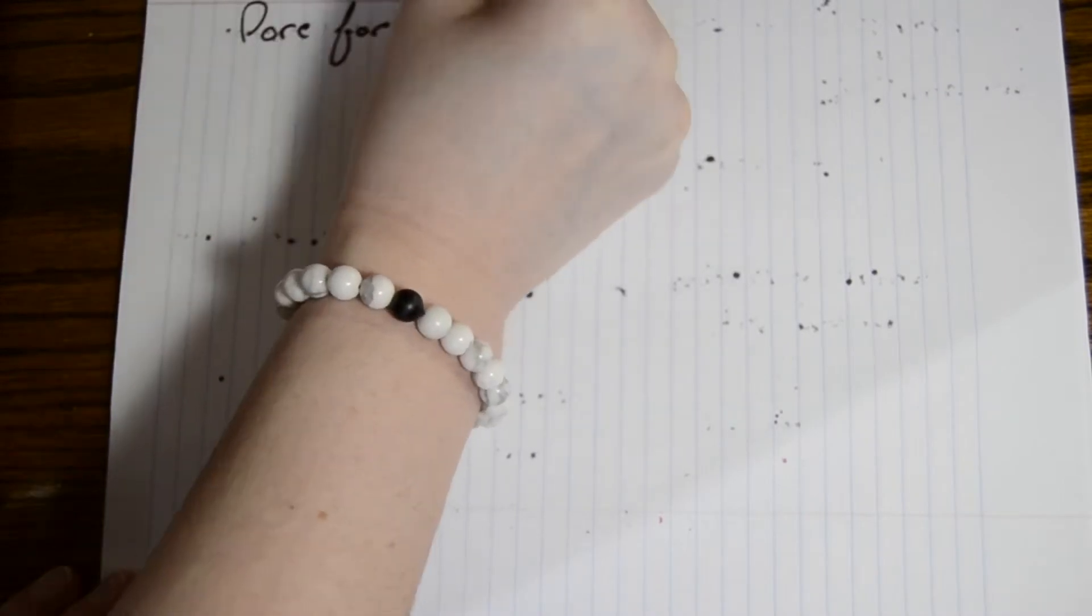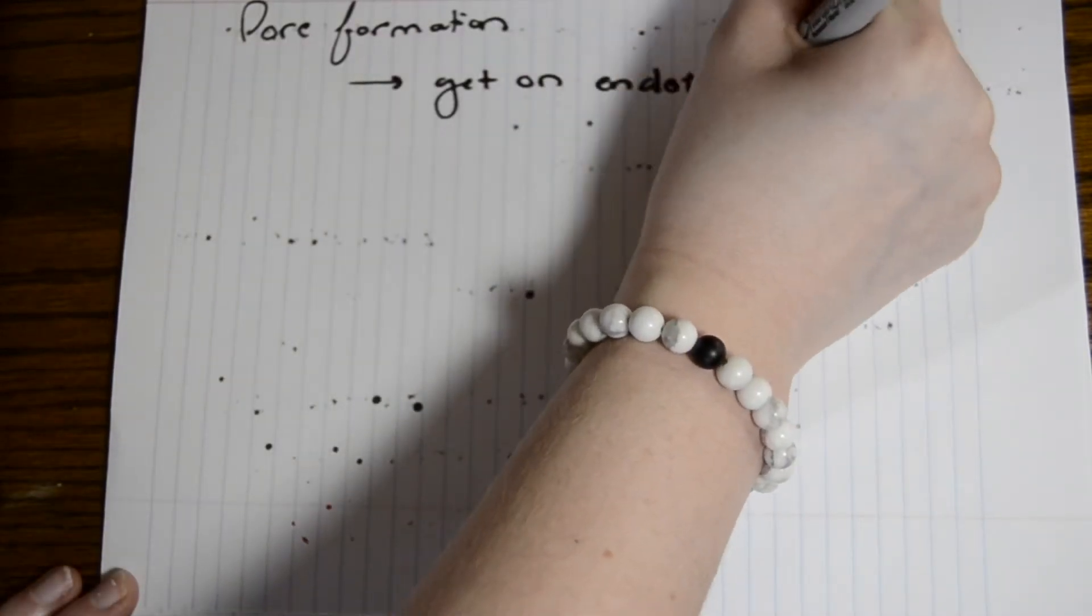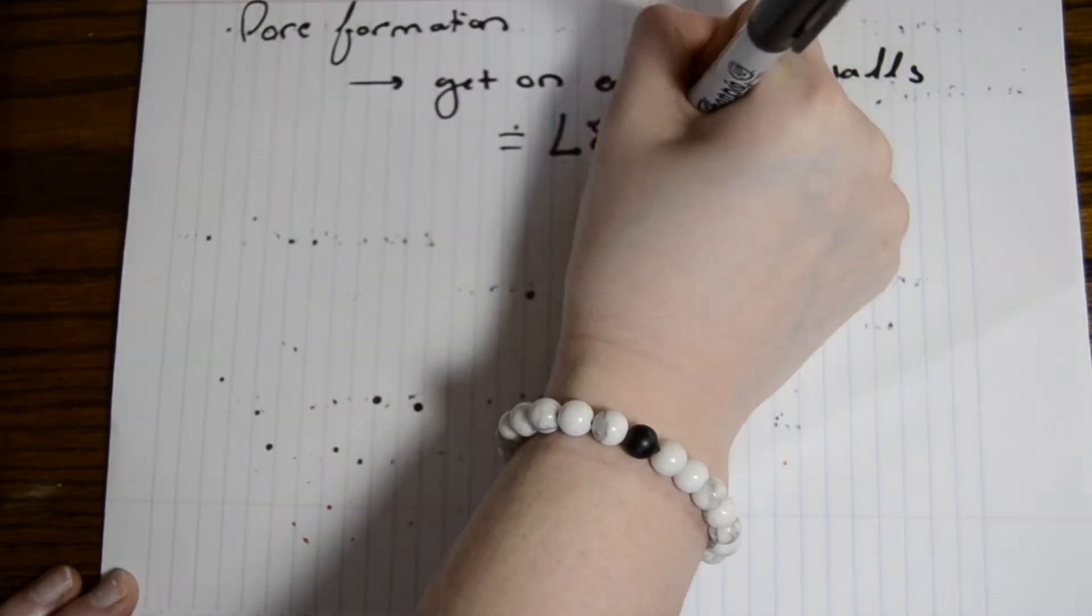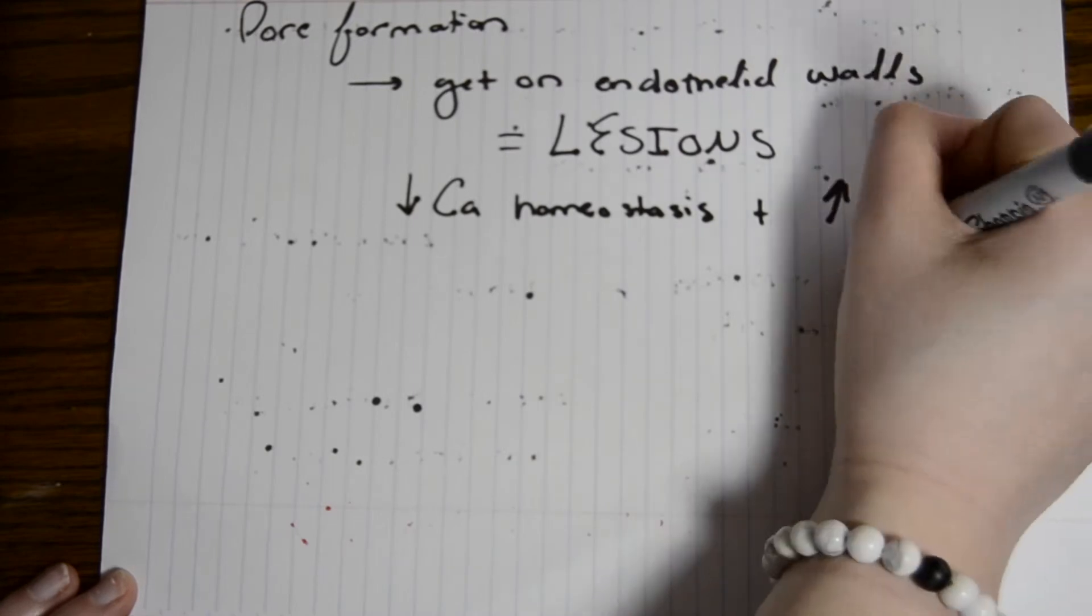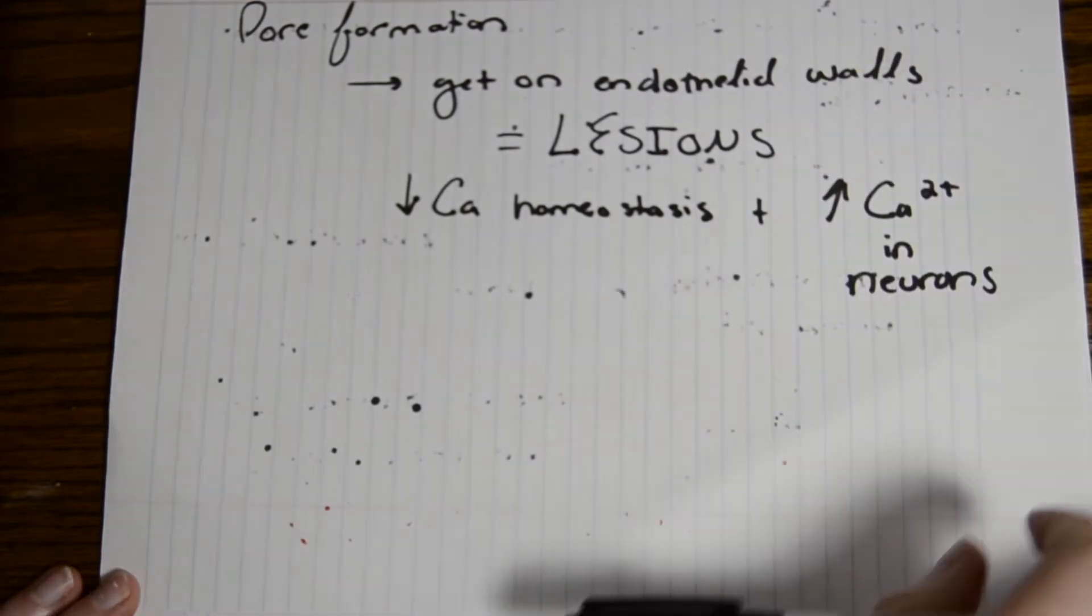Amyloid beta peptide also gets on endothelial walls, which causes lesions. This causes a decrease in calcium homeostasis and an increase in calcium in neurons.